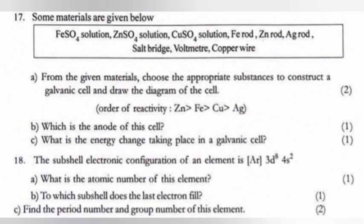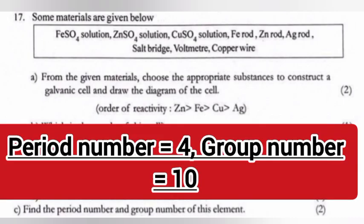Question 18: The subshell electronic configuration of an element is Ar 3d8 4s2. 18a: What is the atomic number of this element? Answer: 28. 18b: To which subshell does the last electron fill? Answer: 3d. 18c: Find the period number and group number of this element. Answer: Period number is 4, group number is 10.